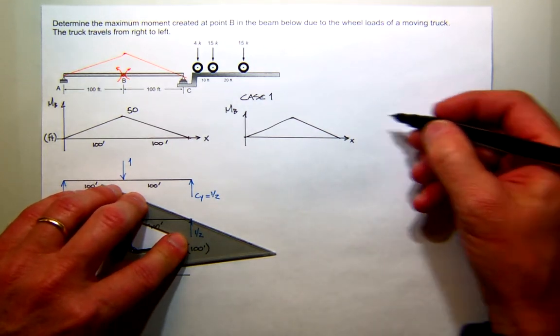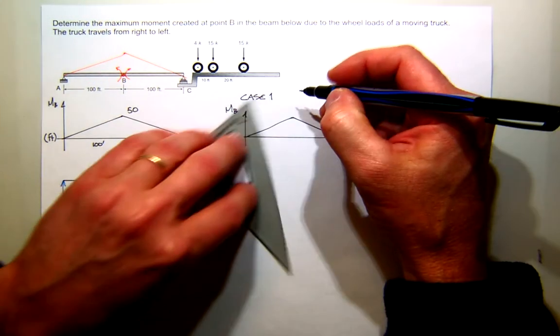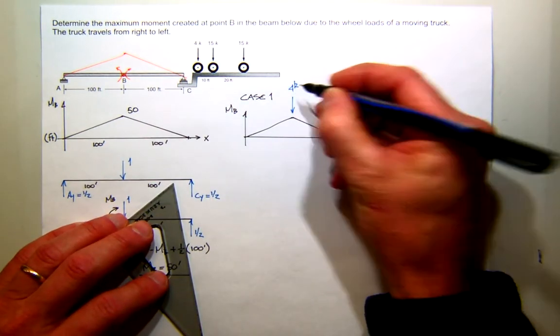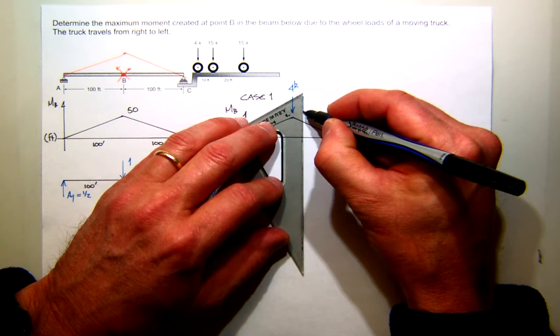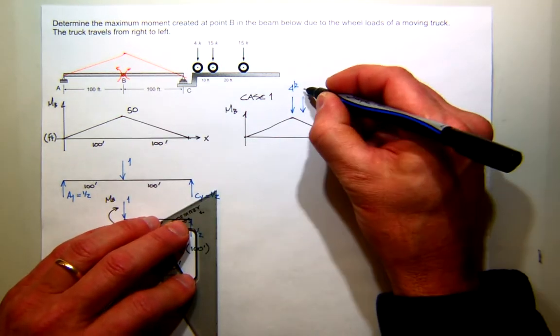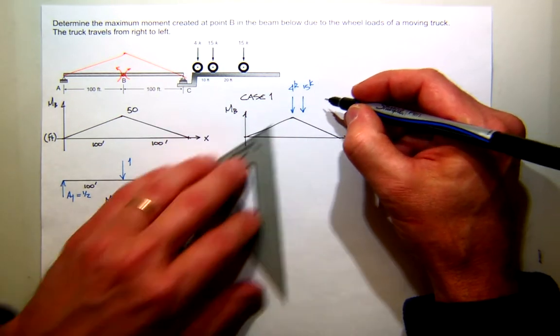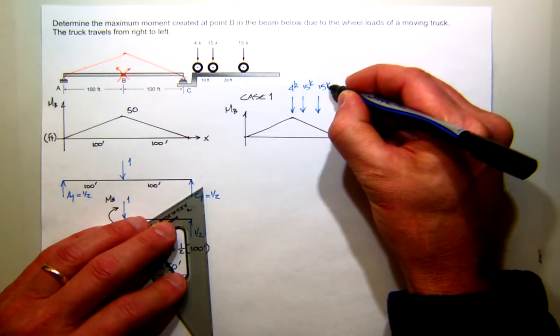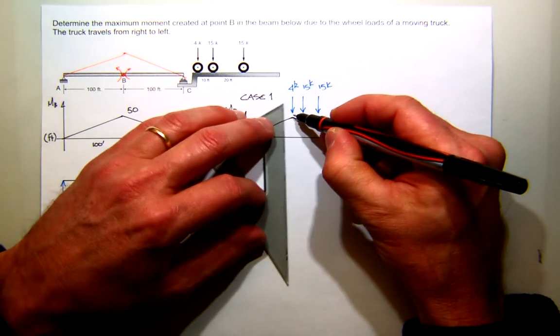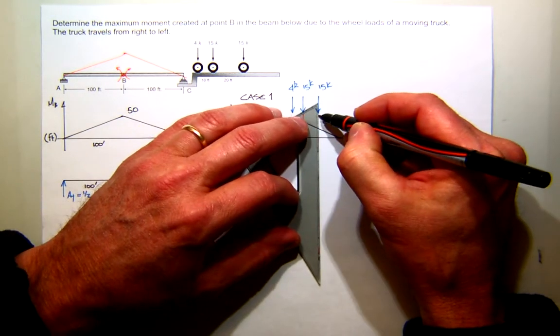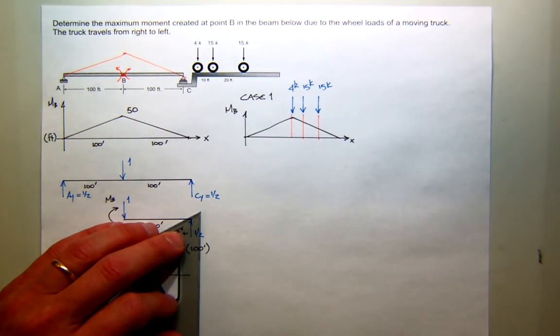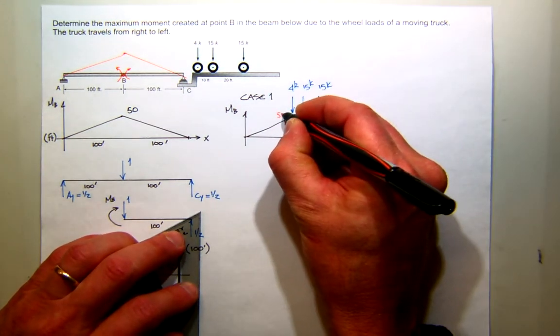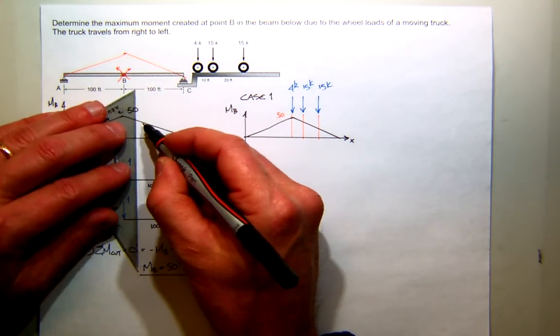Moving from the right, I'm going to stop my first load, four, right here. And then 10 feet back, I have the 15-kip force. And another 20 feet back, I have the second 15-kip force. I need to find the ordinates on my line that correspond to those positions. Now, the first one is easy. It's 50, right?